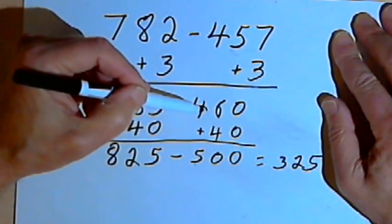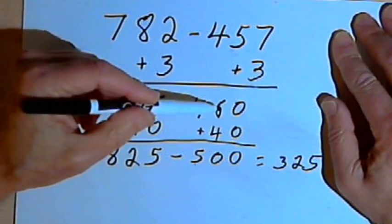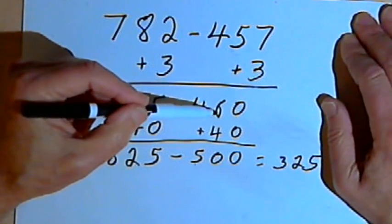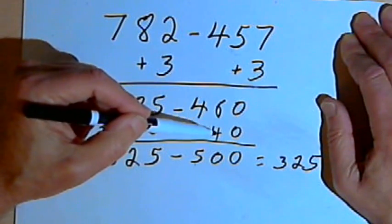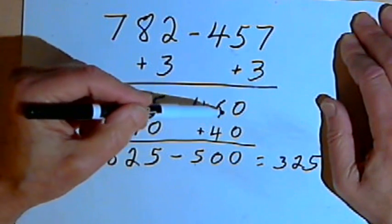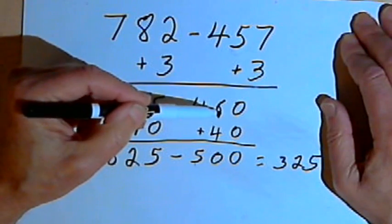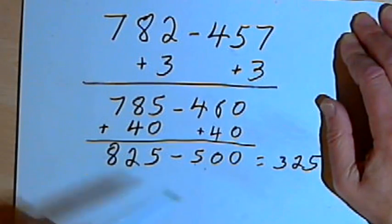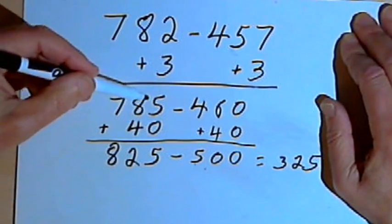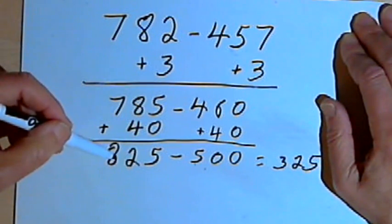Now that I've got 460 as the number I'm taking away, I decide I'd like to get a 0 in the tens column. So to do that, I would have to add a 4 to the 6. Or in other words, I want to add 40 to that whole number. When I add 40 to 460, I get 500. And when I add 40 to 785, I get 825.